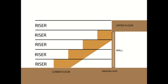They need to be equally divided across the distance that the stairway will run — for example, the distance between the top of the lower floor and the top of the upper floor.